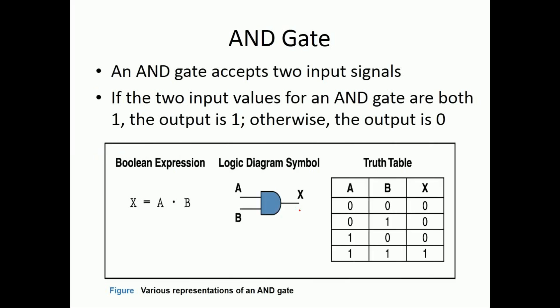Next is the AND gate. AND gate has a minimum number of inputs equal to 2, but we can have a maximum number of inputs equal to N. Let us start with the example of a 2-input AND gate. AND is represented by multiplication or dot — that is, A dot B. This is the logic symbol diagram.